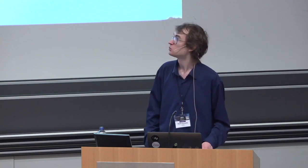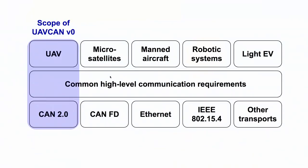What I just described is UAVCAN version 1. UAVCAN version 1 was built from our experience deploying the first experimental version, known as UAVCAN version 0. Version 0 allowed us to test our ideas against real applications — not just in simulation, but on things that actually go out and fly. UAVCAN version 0 was defined for unmanned aerial vehicles with CAN as the only supported transport, specifically CAN 2.0, which is limited to 8 bytes per message.